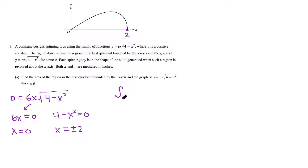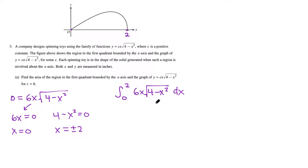Now that we have our boundaries, we set up the integral from 0 to 2 of 6x times the square root of (4 minus x squared) dx. Since this is a complicated product, we can't integrate right away — we need u-substitution. The more complicated term is (4 minus x squared), so we let u equal 4 minus x squared.